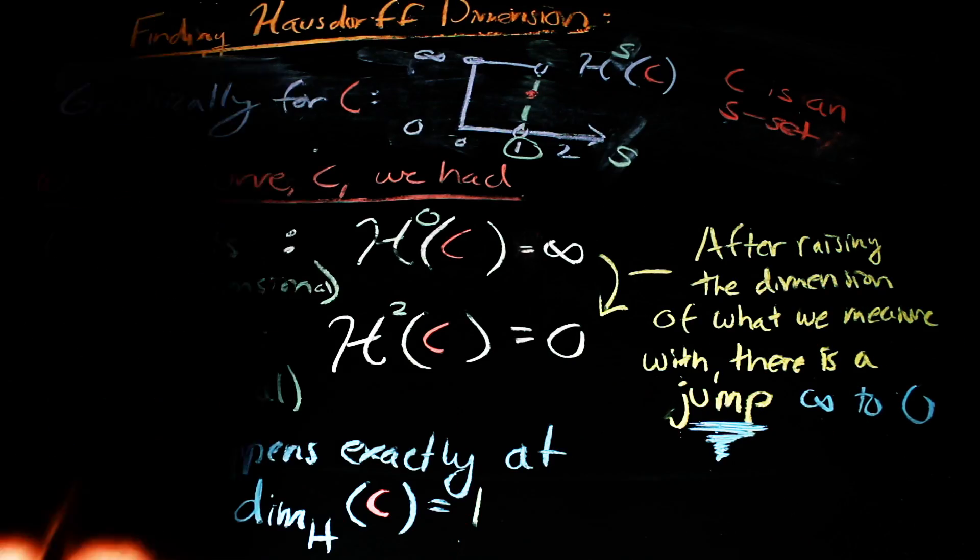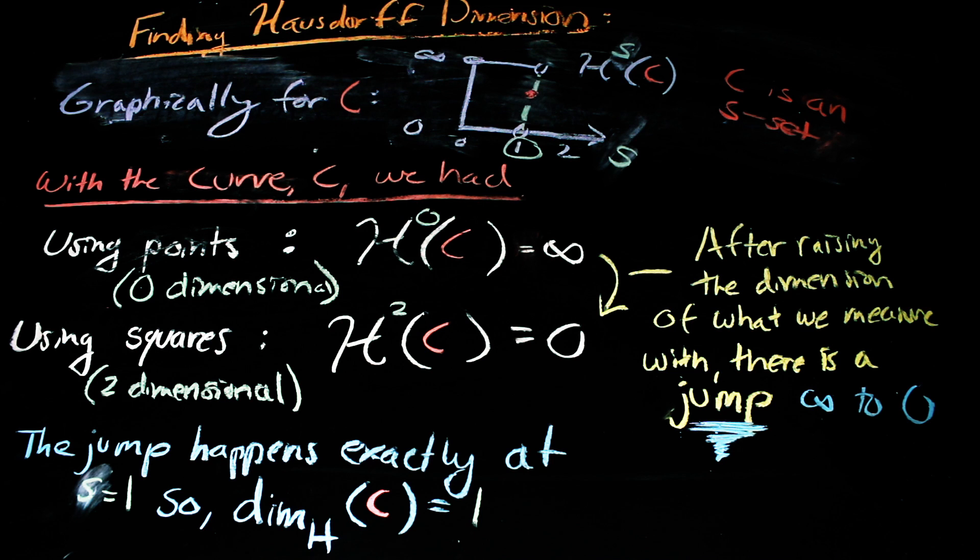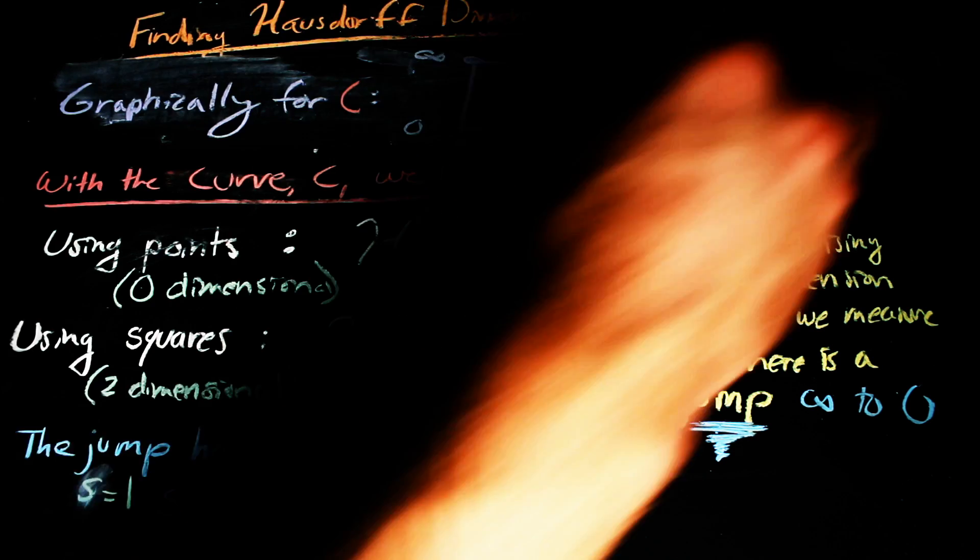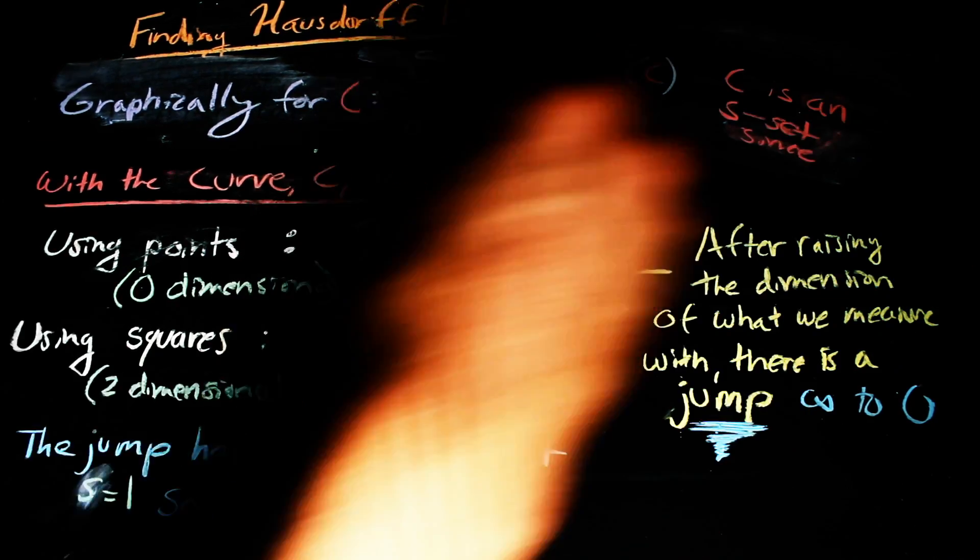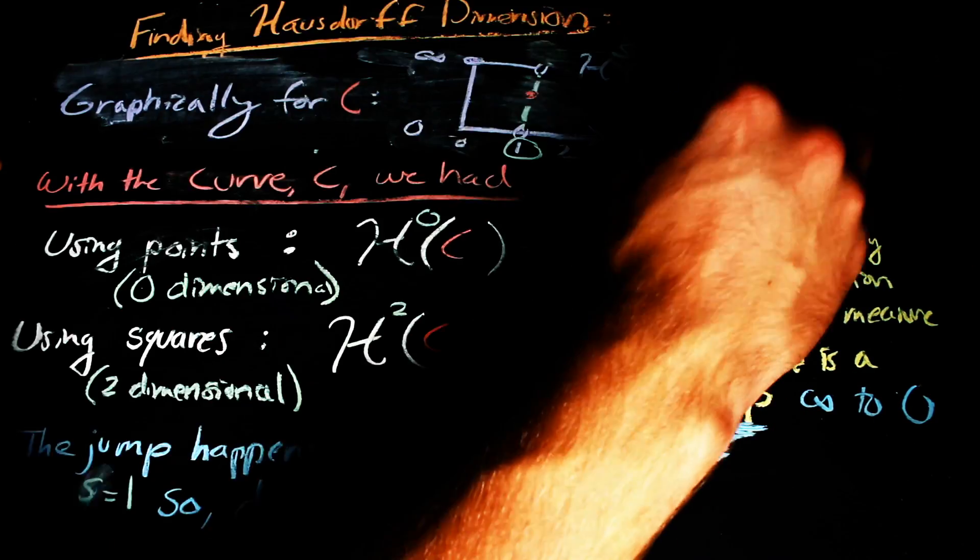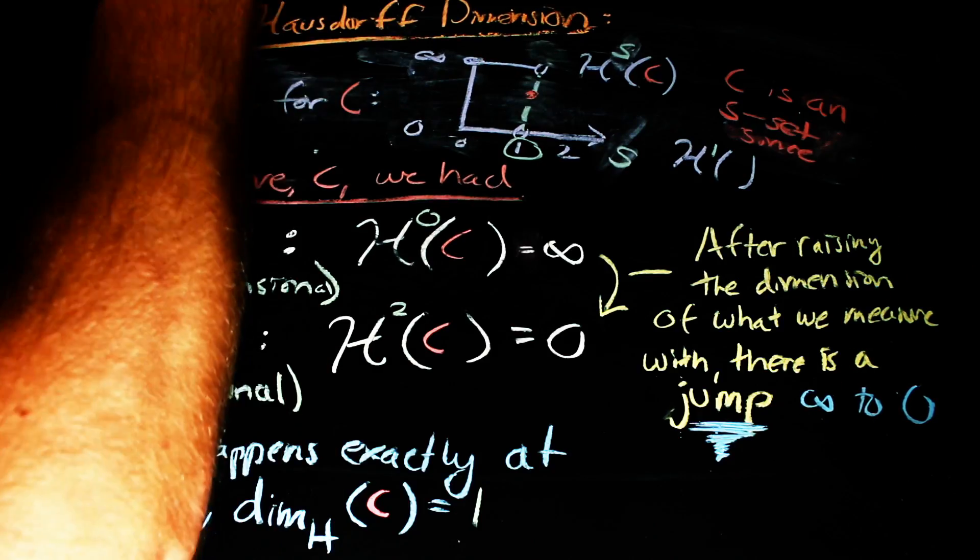Sets like this that have a jump point where this way of measurement is not zero or infinity are super nice. As they make the determination of dimension, which, if we are being completely rigorous, can be very, very involved, a bit easier.